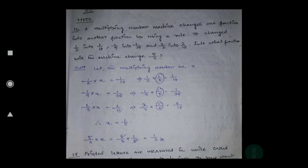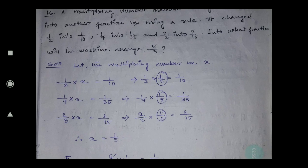If you find that rule, then if another number is given — what fraction will the machine change 5/3 into? That means if you give the input as 5/3, what output will the machine give? We don't know the machine rule, so let the number be x. You can take any alphabet — p, q, r, a, b, c, whatever you want.